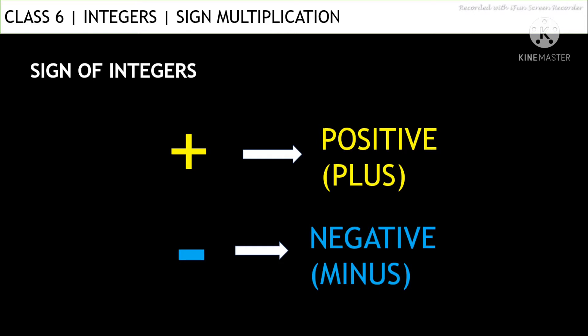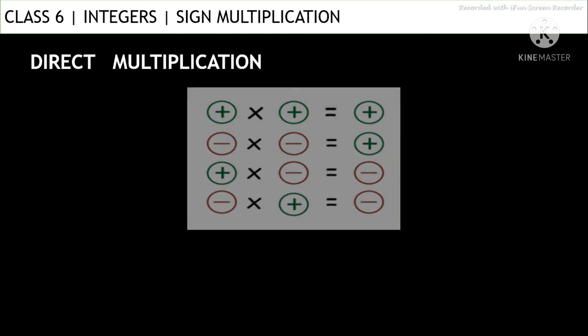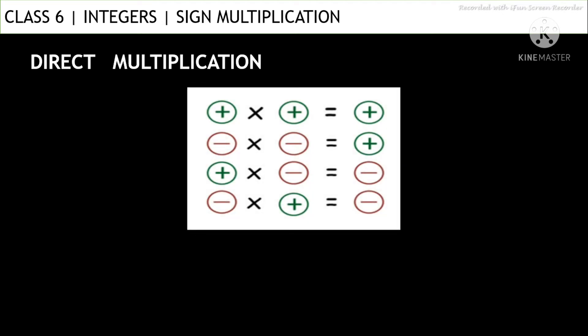To start with direct multiplication — here are the formulas: plus into plus gives you plus, minus into minus gives you plus, plus into minus gives minus, and minus into plus gives minus. If you observe, there is a pattern followed here.